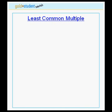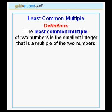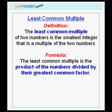In this tutorial, we will learn how to calculate the least common multiple of two numbers. First, let's look at the definition. The least common multiple of two numbers is the smallest integer that is a multiple of the two numbers. The formula for calculating the least common multiple is to take the product of the two numbers and divide by their greatest common factor.